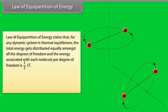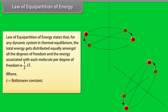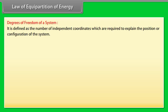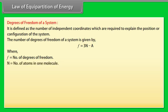Law of equipartition of energy states that for any dynamic system in thermal equilibrium, the total energy gets distributed equally amongst all the degrees of freedom, and the energy associated with each molecule per degree of freedom is half KT, where K is equal to Boltzmann's constant and T is equal to absolute temperature of the system. Degree of freedom of a system is defined as the number of independent coordinates which are required to explain the position or configuration of the system. The number of degrees of freedom of a system is given by F equals 3N minus A, where F is equal to number of degrees of freedom, N is equal to number of atoms in one molecule, and A is equal to number of independent relations between the atoms of one molecule.